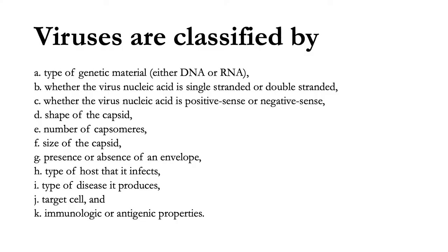Viruses mutate by copying the host cell's nuclear membrane or cell membrane to form the viral envelope so that they can copy a host cell's genome without being detected. They then alter this membrane to survive by adding proteins, which enable the virus to recognize the next host cell to be invaded. The next classification of viruses is based on the type of host infected, the type of disease produced, the target cells, and the immunologic or antigenic properties.